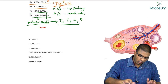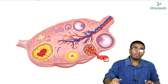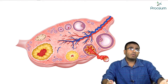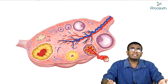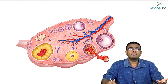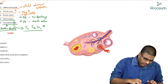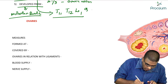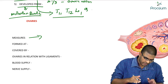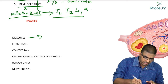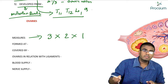Now we will discuss the ovaries. What you are seeing here is a cross-section of the ovary. A female has two ovaries. Their function is to contain the developing follicle which releases the ovum. For the exam, the ovary measures 3 × 2 × 1 centimeters.